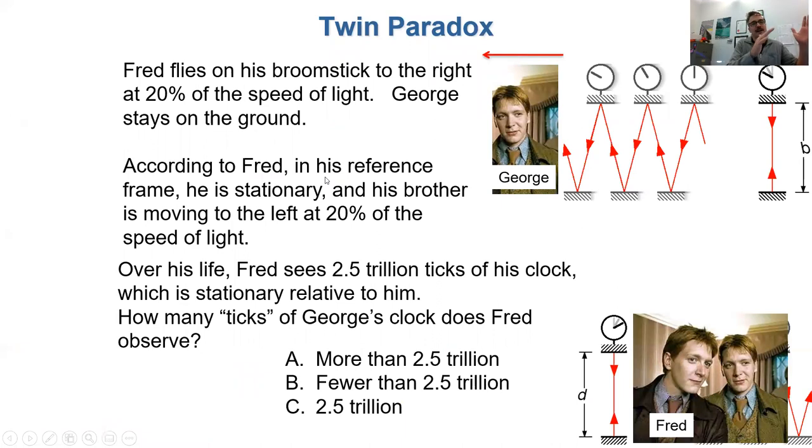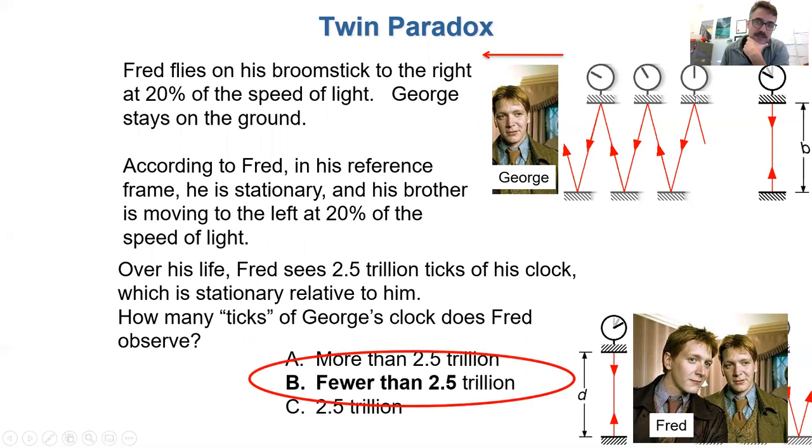Now, here's where it comes to the paradox. Fred is flying on his broomstick to the right at 20% of the speed of light. He looks in his rear view mirror and he sees George back there on Earth, who now in Fred's reference frame is moving 20% the speed of light backwards. So if Fred, while he's flying through space on his broomstick, measures 2.5 trillion ticks of his clock, which is stationary relative to him, how many ticks of George's clock does Fred observe? And again, since George's clock back on Earth is going to look like the slow one from Fred's point of view.